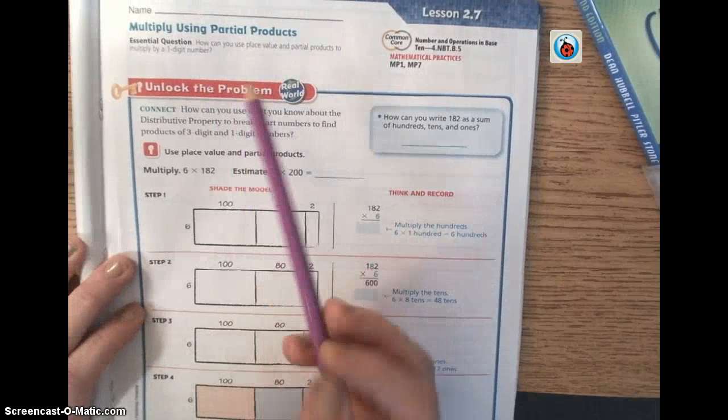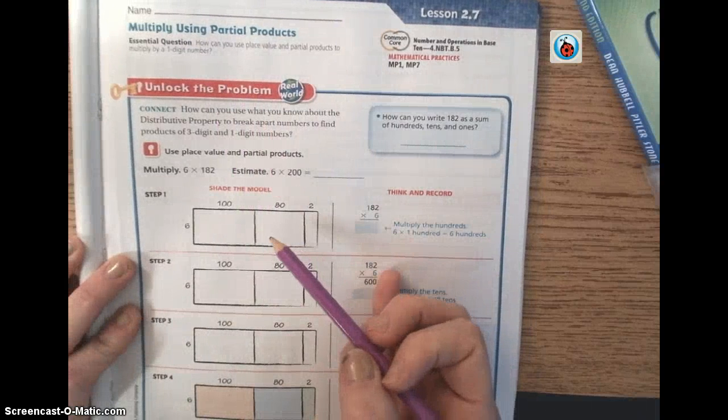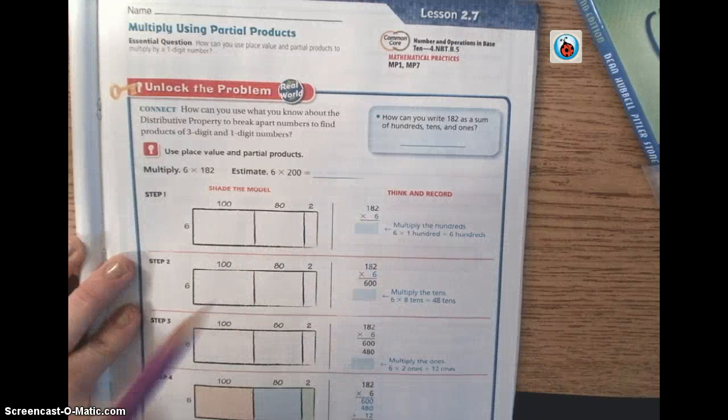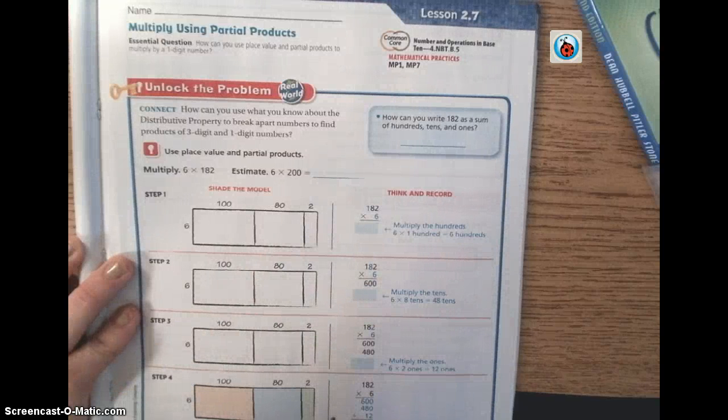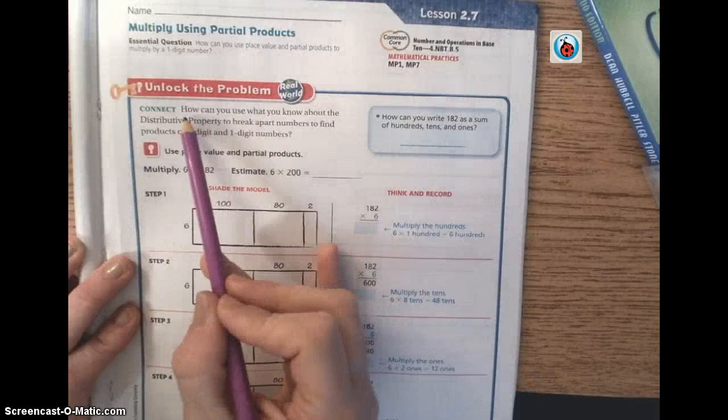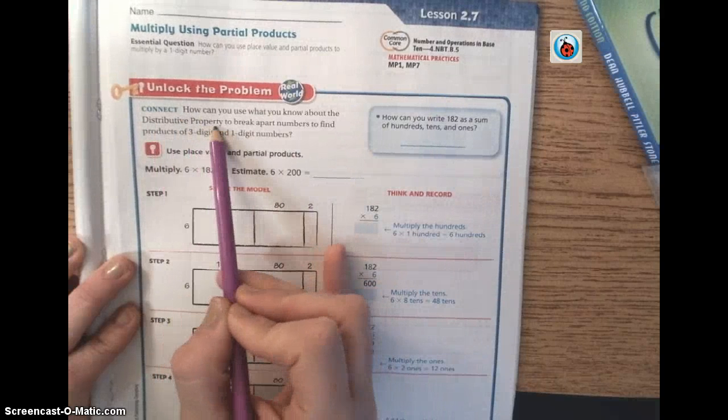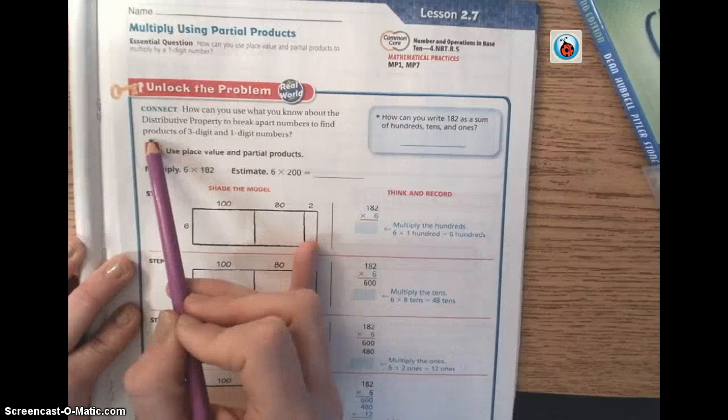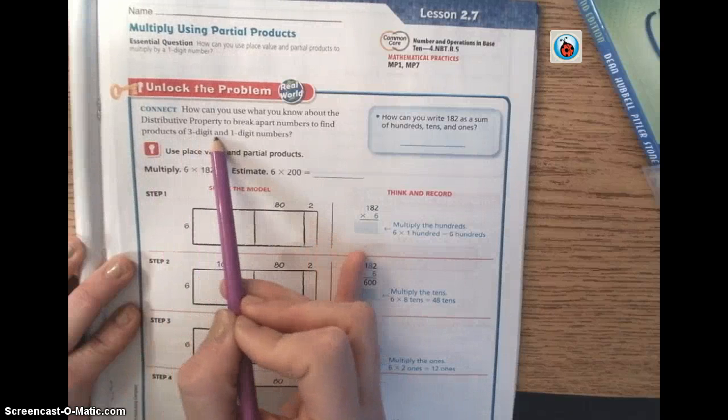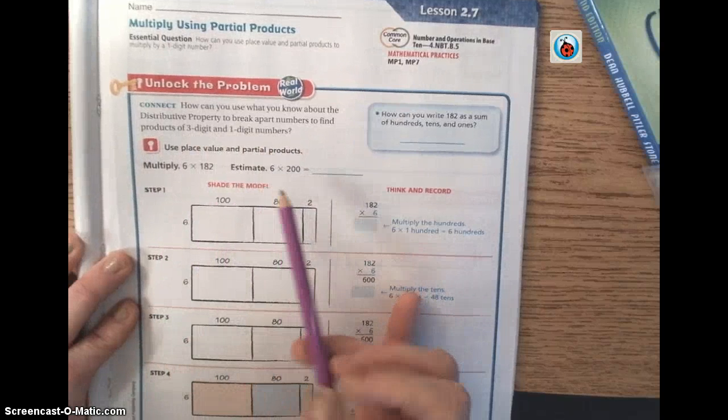In this lesson we are going to be using partial products. So we're going to take a number and we're going to break it apart into partial products. Connect says, how can you use what you know about the distributive property to break apart numbers and find products of a 3 digit and a 1 digit number?